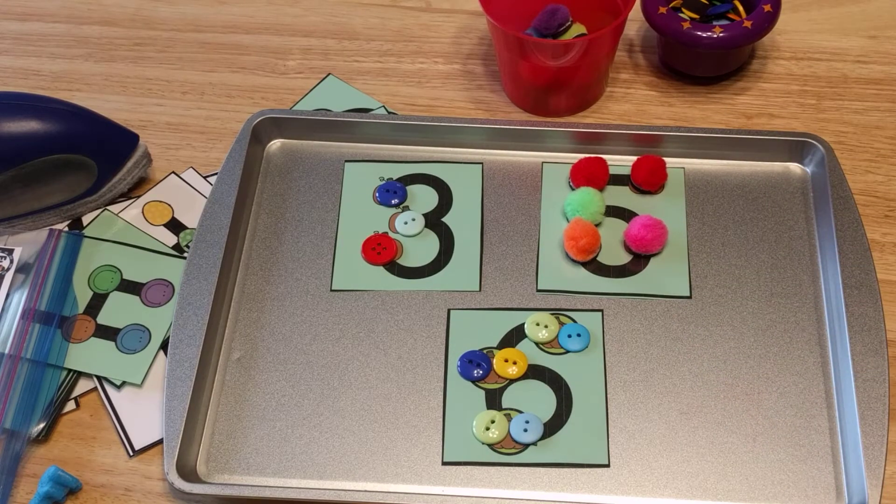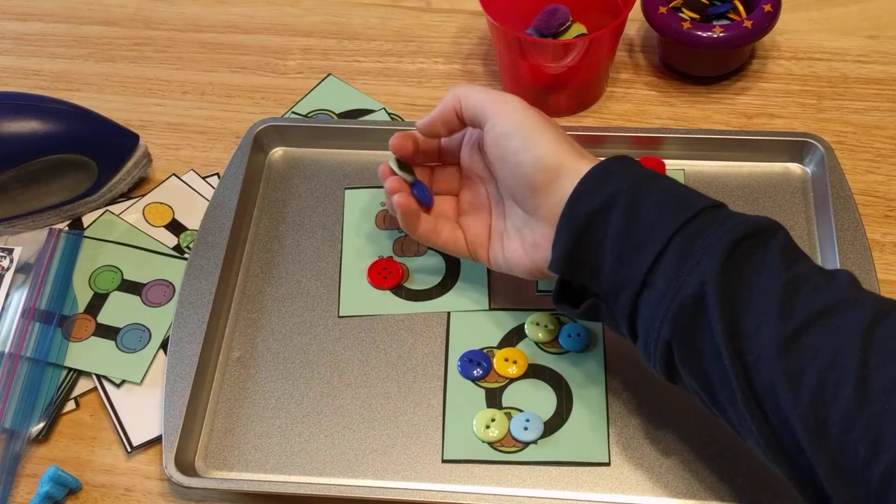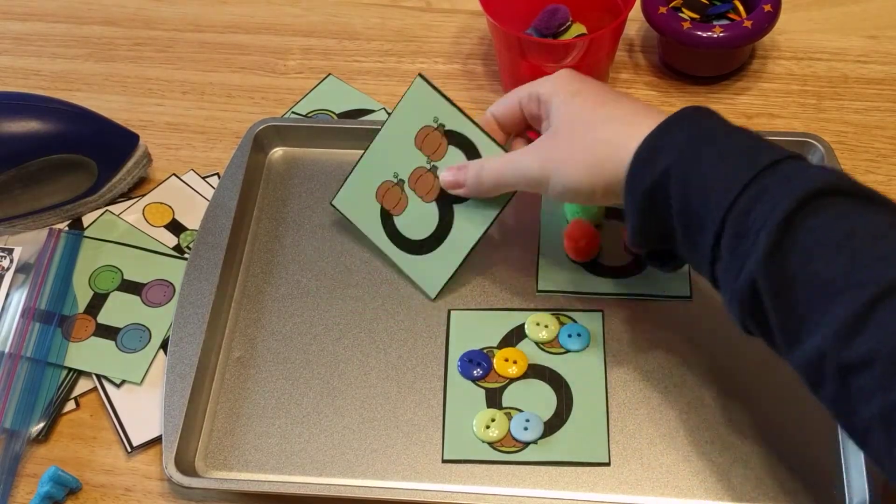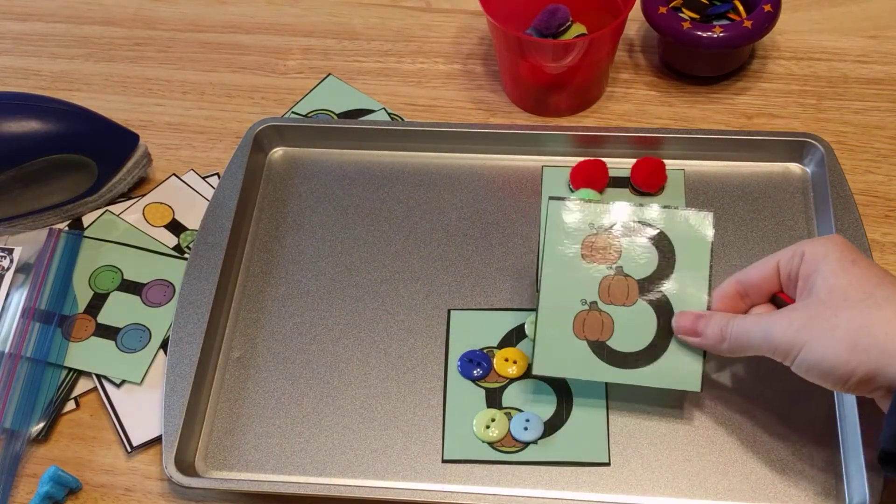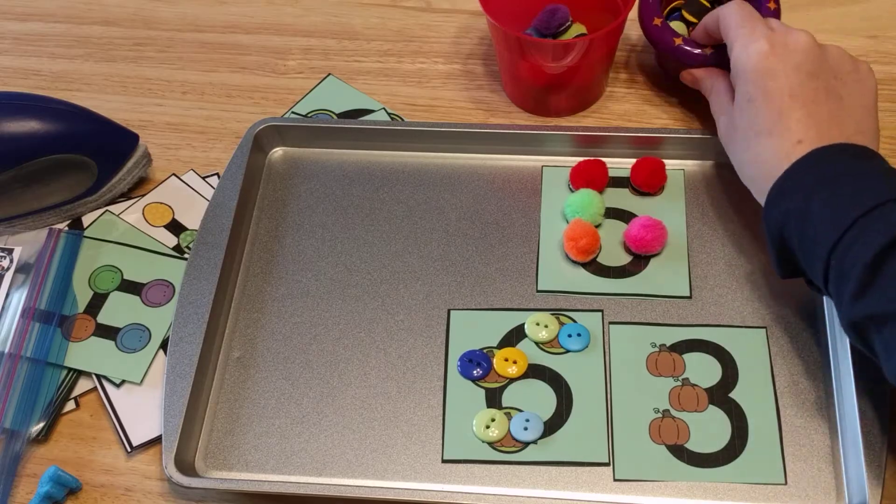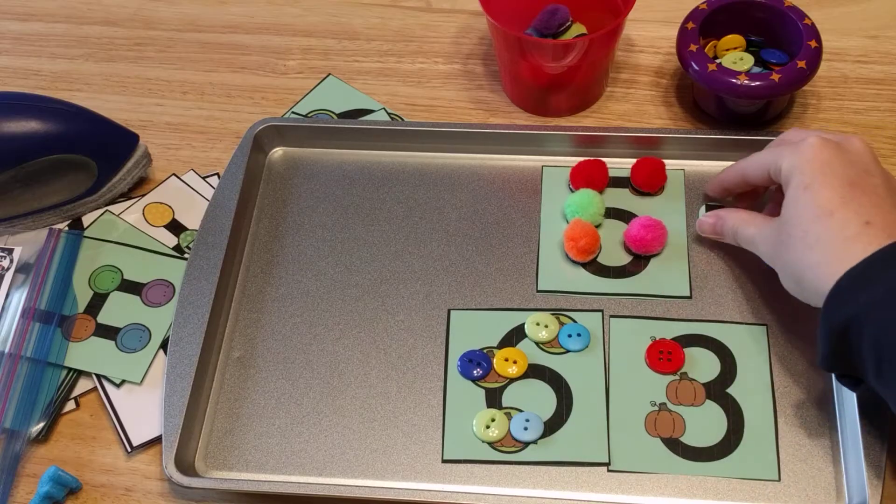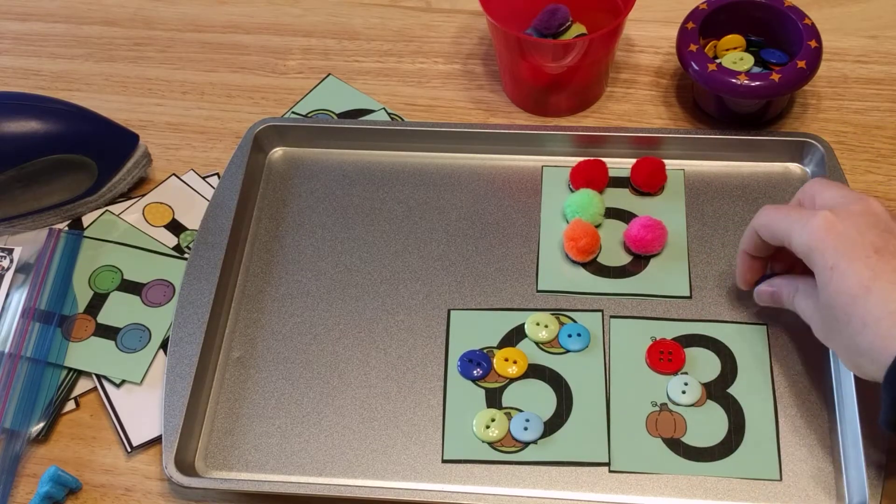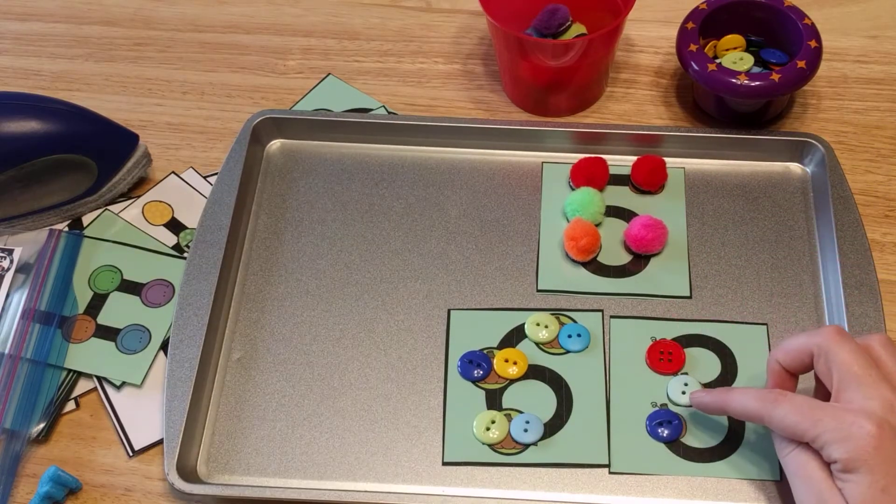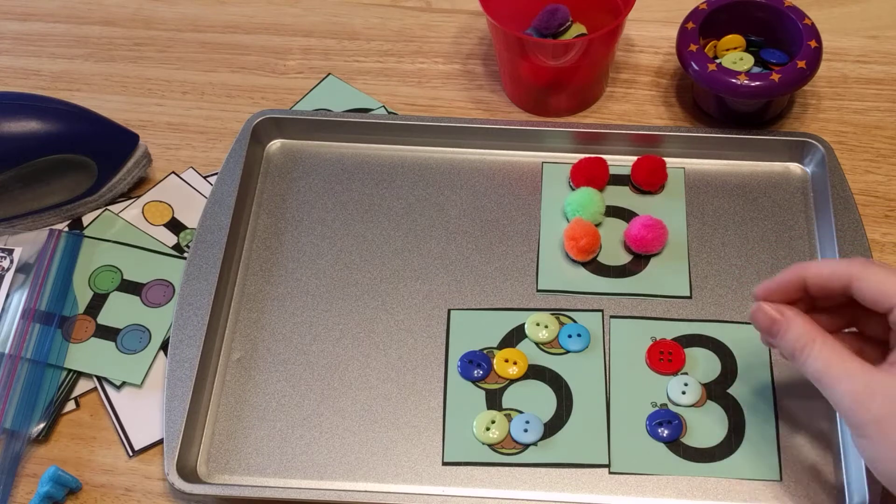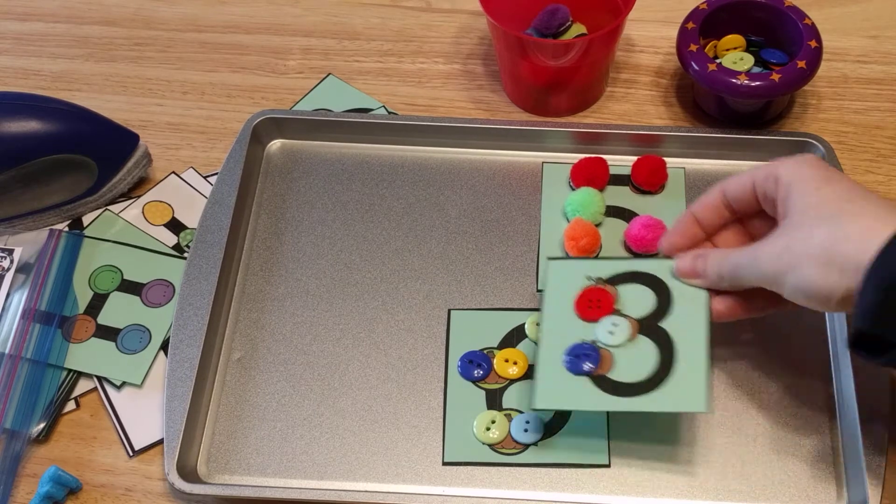Okay, so then what I have my preschooler do is take the card. So here's the number three card with the pumpkins. And they would take the manipulatives and they would take one as they count. One, two, three. So they're learning where the touch points are, but they're also using a manipulative to do so.